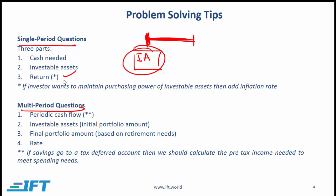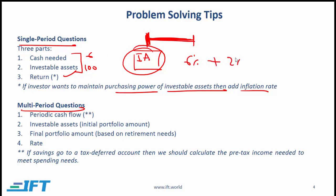Very often the question will say that the investor wants to maintain the purchasing power of investable assets. If so, you need to add inflation to the number you calculated. For example, if investable assets are 100, cash needed is 6, and inflation is 2%, then the return is 6/100 = 6%. Adding 2% inflation gives you the nominal required rate of return of 8%.